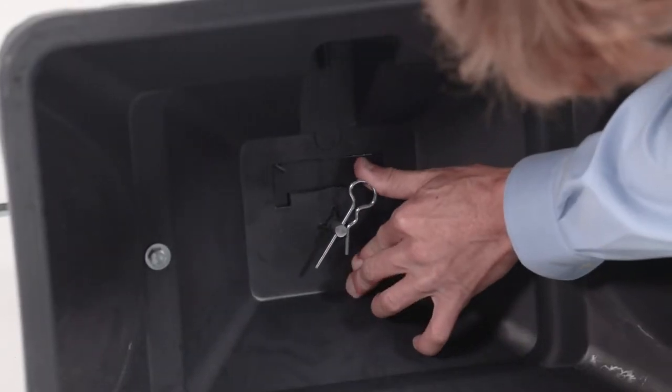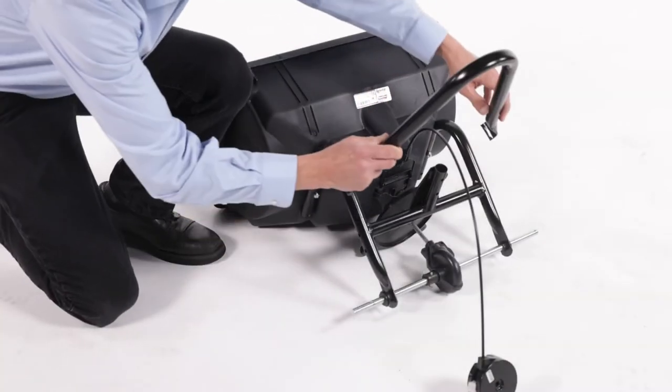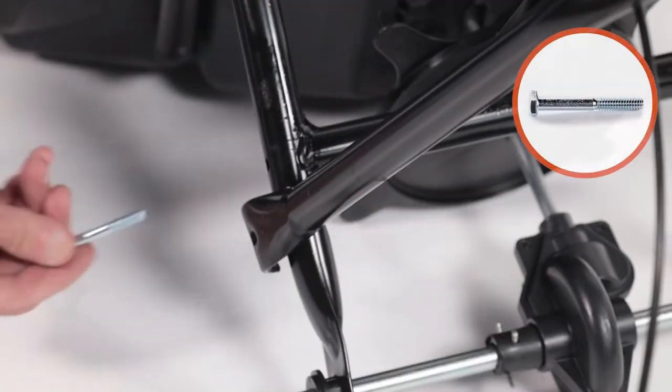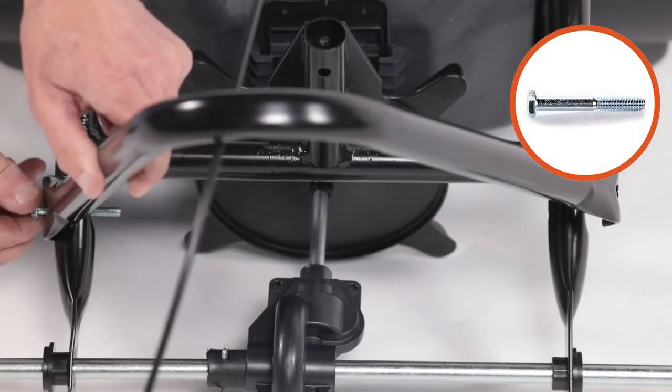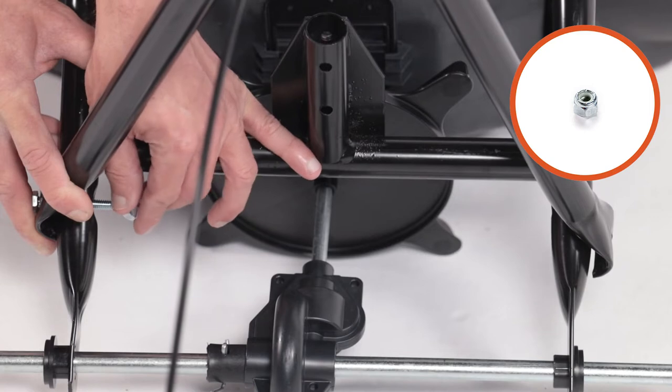Now assemble the hairpin agitator, Part O, to the impeller shaft. Next, align the stand tube, Part P, and secure it with two 1⁄4-inch bolts, Part A, and two 1⁄4-inch nylock nuts, Part F.